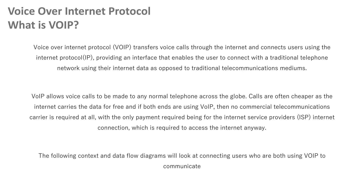Telephone lines are usually wired, and when you pick up your phone and call someone it uses those mediums. With VoIP, you can call someone from your computer and they can answer on their telephone using traditional lines. VoIP allows phone calls to be made to any telephone across the globe, and calls are often cheaper since the internet carries the data. If both ends are using VoIP, no commercial telecommunications are used — the only payment required is for your internet connection, so technically the call is free.